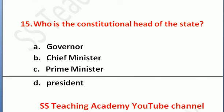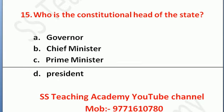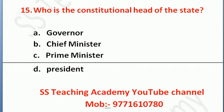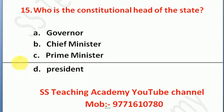Question number 15: who is the Constitutional Head of the State? Option A: Governor, Option B: Chief Minister, Option C: Prime Minister, Option D: President. The Governor is the Constitutional Head of the State — Option A is the right answer.